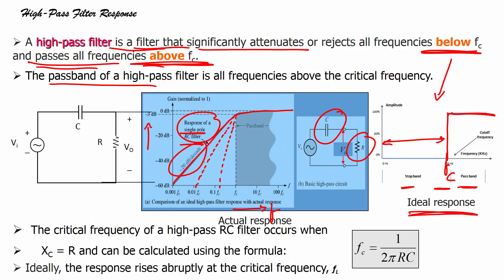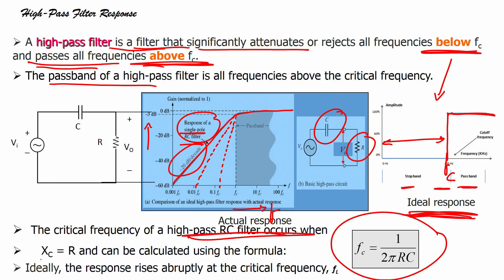As you increase the order, you approach the ideal response. The critical frequency of a high pass RC filter is given by the same formula as for the low pass filter: FC equals 1 upon 2πRC. This is the critical frequency formula for the high pass active filter.